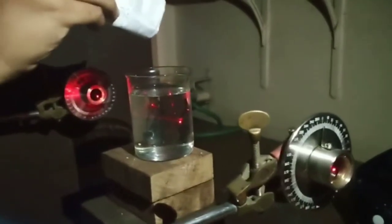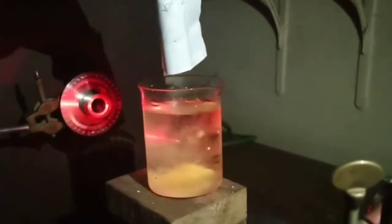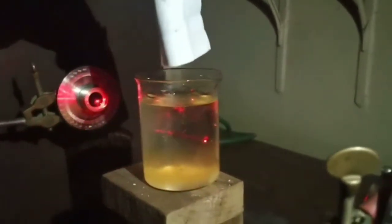After taking the reference point, put the sugar that was weighed before with the help of a digital weighing machine. We have taken three grams of sugar.